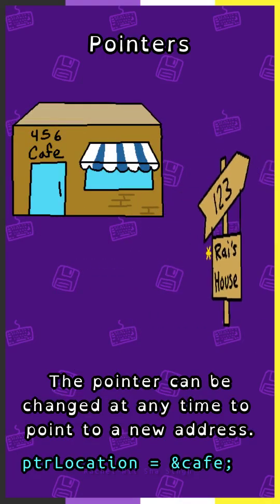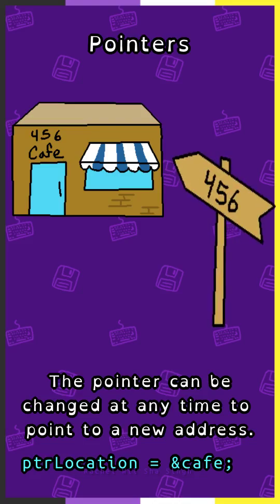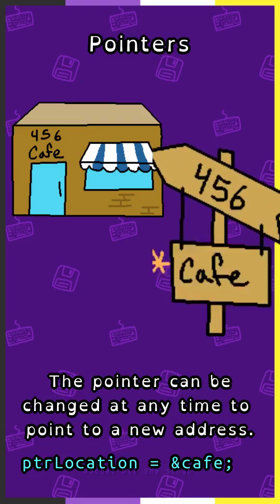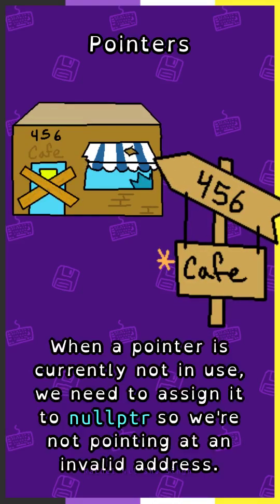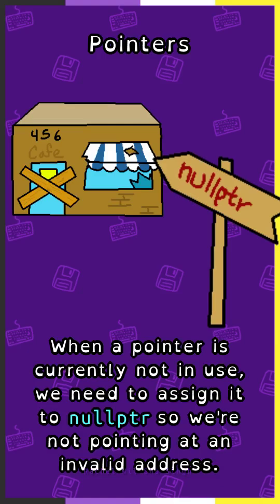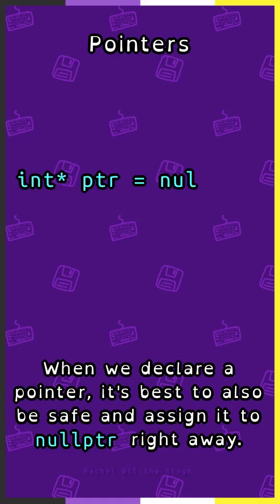The pointer can be changed at any time to point to a new address. When a pointer is currently not in use, we need to assign it to null pointer, so we're not pointing at an invalid address. When we declare a pointer, it's best to also be safe and assign it to null pointer right away.